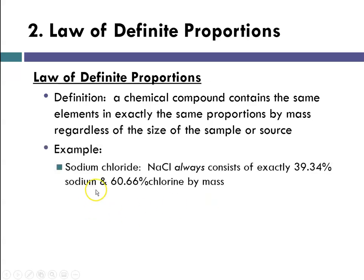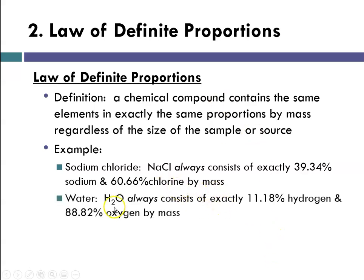For example, sodium chloride will always consist of 39.34% sodium to 60.66% chlorine by mass. A compound is a compound, and the masses of the elements in that compound will always be the same. For water, it's always about 11.18% hydrogen to 88.82% oxygen by mass.